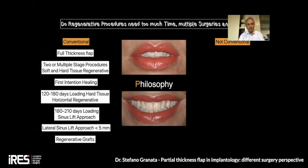What is the conventional philosophy for surgical procedure in implantology? We use a full thickness flap, two or multiple stage procedures for soft and hard tissue regeneration, and first intention healing. We wait 120 to 180 days before loading for horizontal regenerative procedures, and more for sinus lift. Lateral sinus approach is always chosen if we have less than five millimeters of residual crestal bone, and we use regenerative grafts.